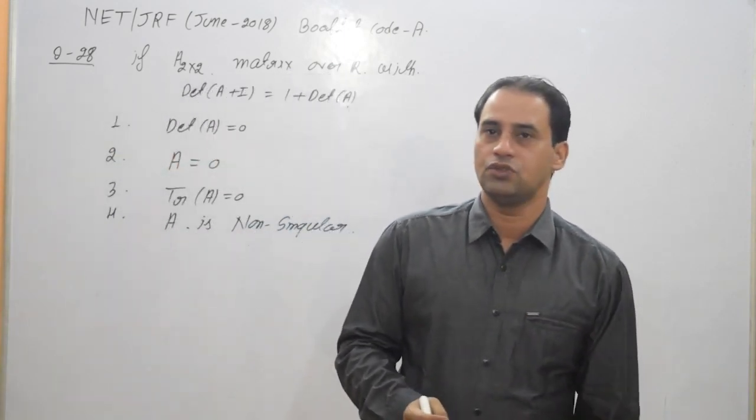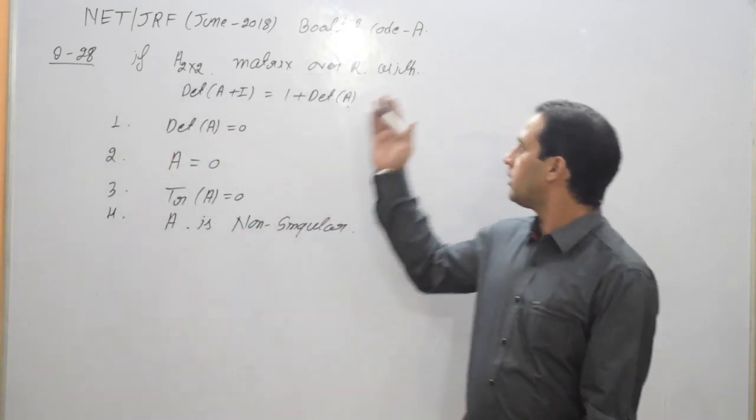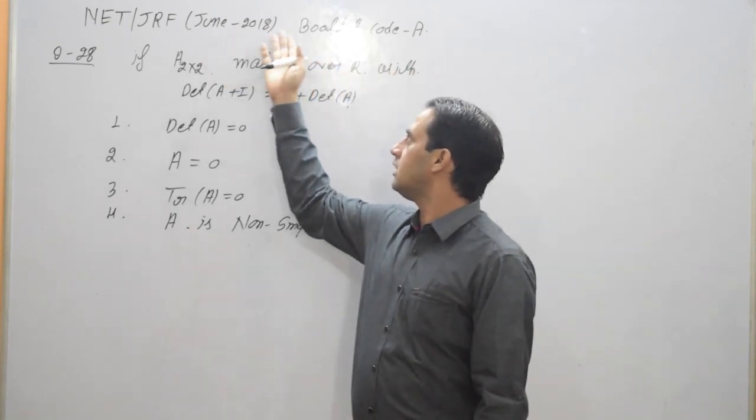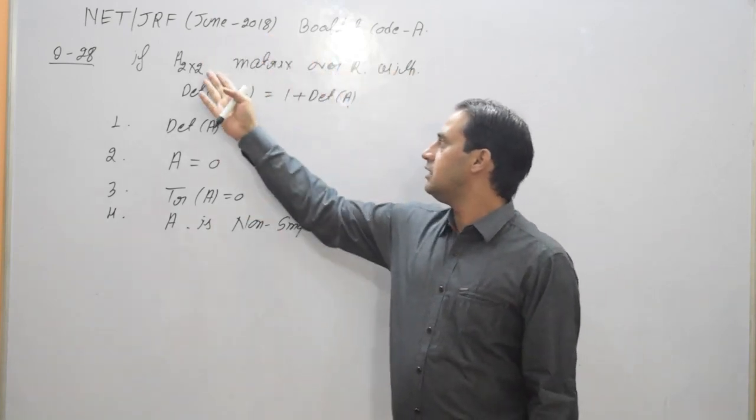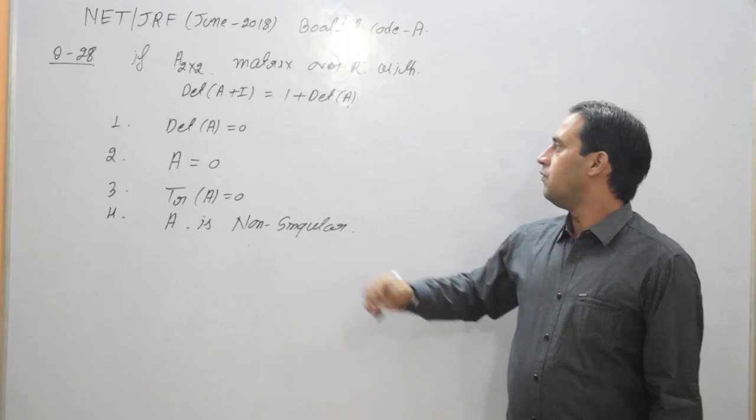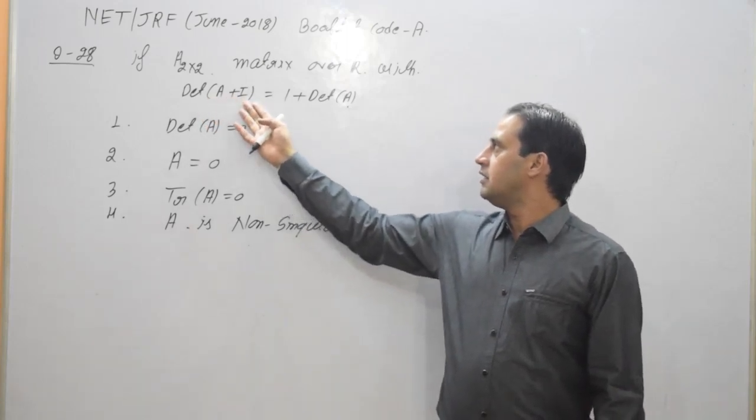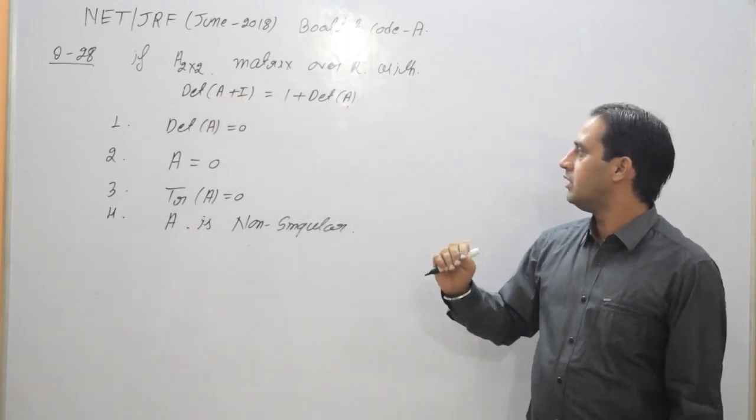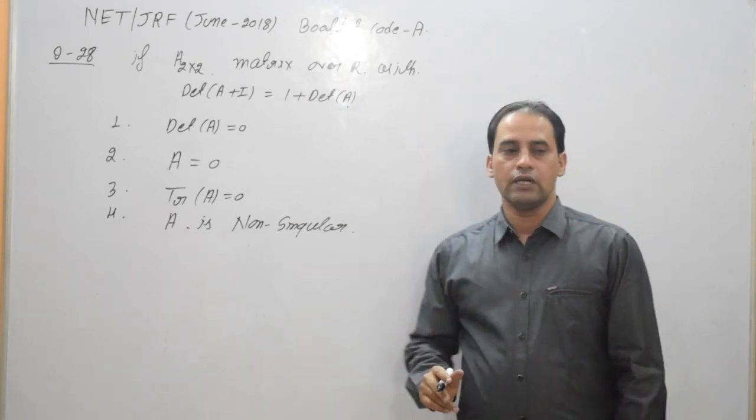Hi everyone, now we will start with question number 20A from booklet code A in June 2018. The question is: A is 2×2 real matrix with determinant of A plus I is equal to 1 plus determinant of A, then we can conclude that one.